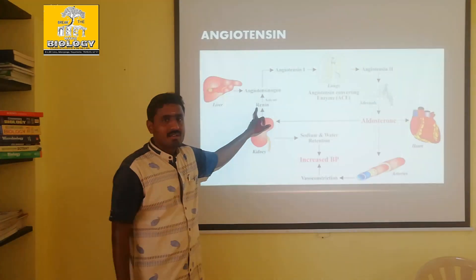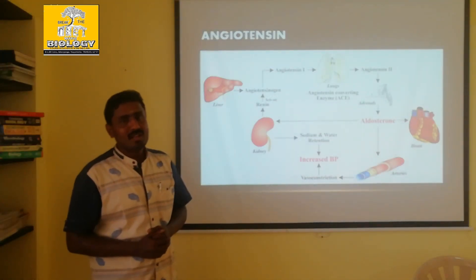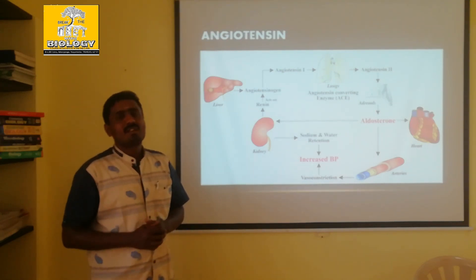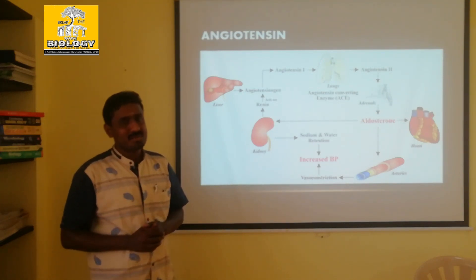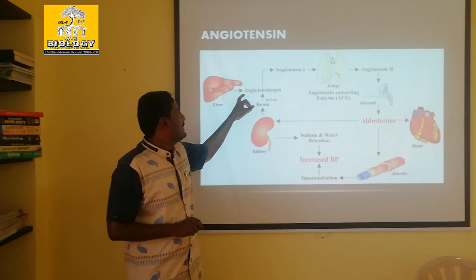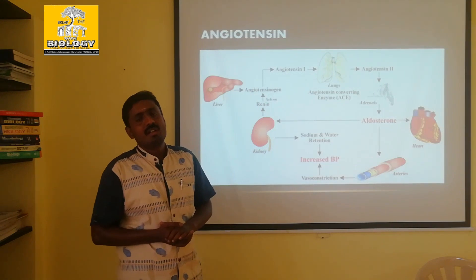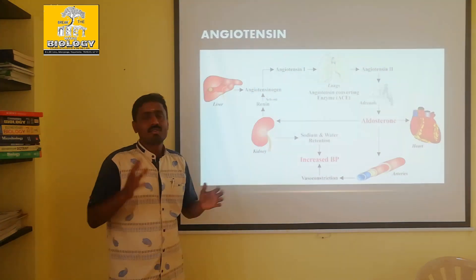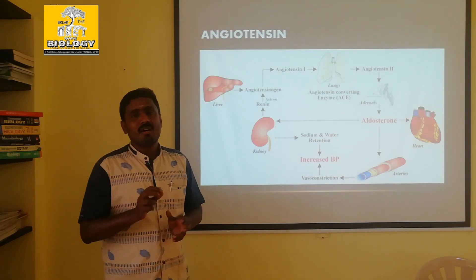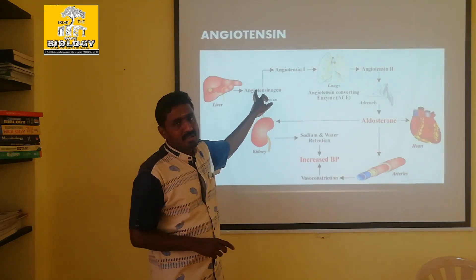Renin acts like a stomach enzyme. That's the renin — similar to caseinogen. Angiotensinogen is converted by renin into Angiotensin 1. Two renin sources are the stomach and kidney. Renin works on peptides and proteins. The kidney produces Angiotensin 1 via single-N angiotensin.